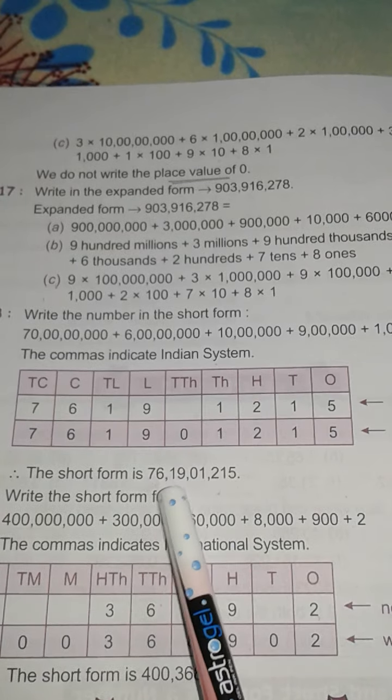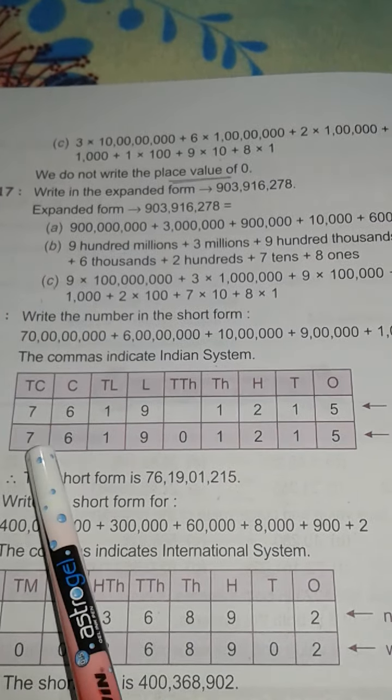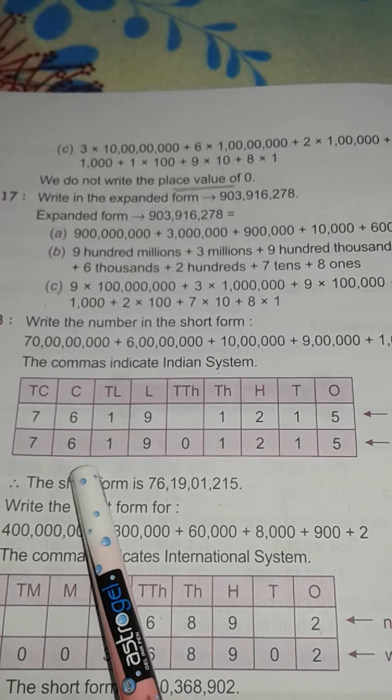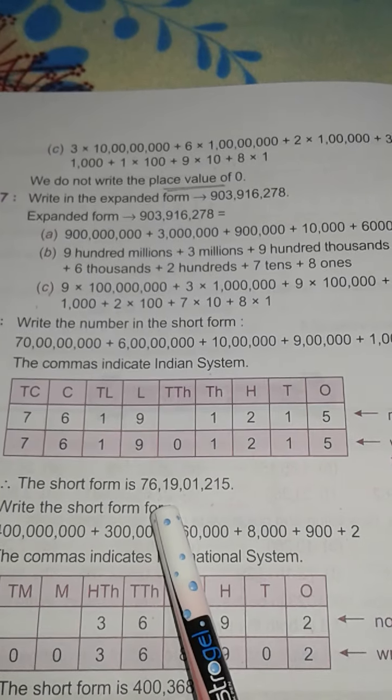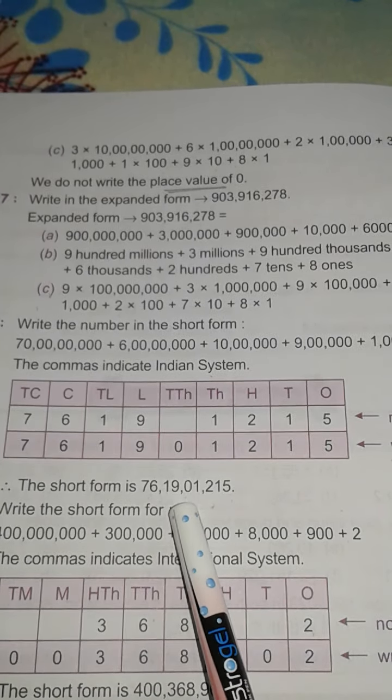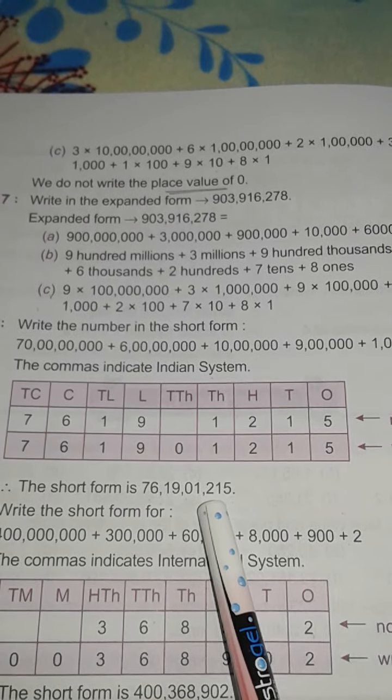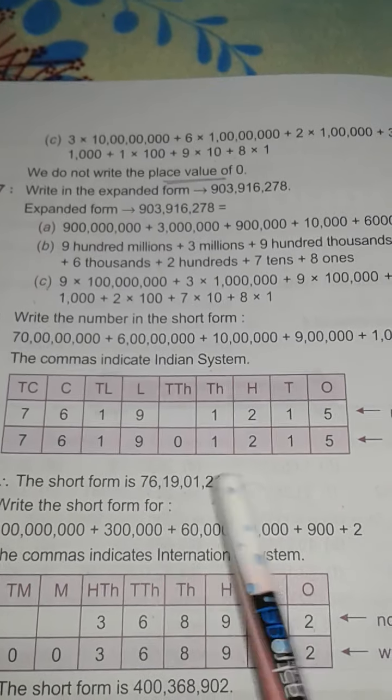Because here the place is 10 crore, so we start from 76 crore, 19 lakh, 1215. Children, put commas properly.